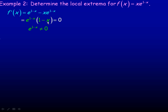But (1 - x) can equal 0. Setting 1 - x = 0 gives x = 1. So there could be a local minimum or local maximum at x = 1. Evaluating the original function: f(1) = 1 · e^(1-1) = 1 · e^0 = 1 · 1 = 1. So the critical point is (1, 1).